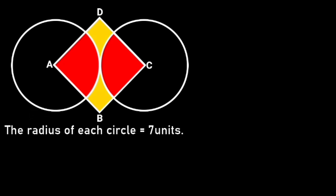Next, let's find the area of the square. To do so, first let's draw a straight line from A to C. Observe that line AC is the radii of the two circles. Since the radius of each circle is 7 units, it follows that AC is equal to 7 plus 7, which is equal to 14 units.